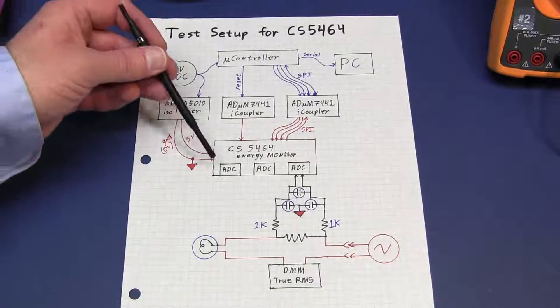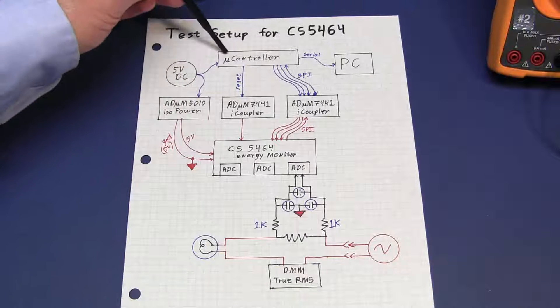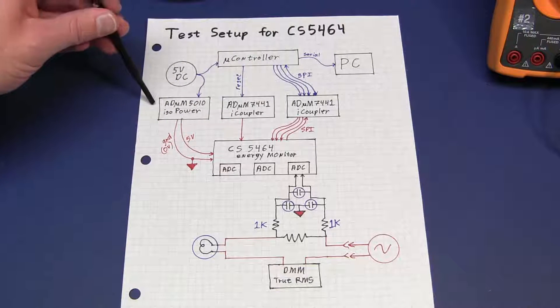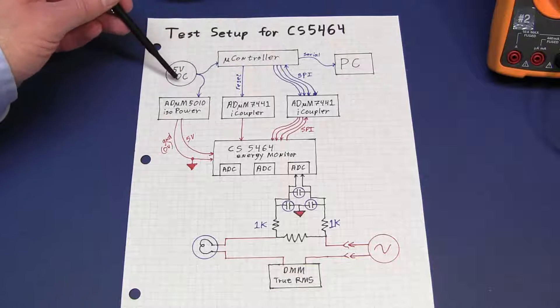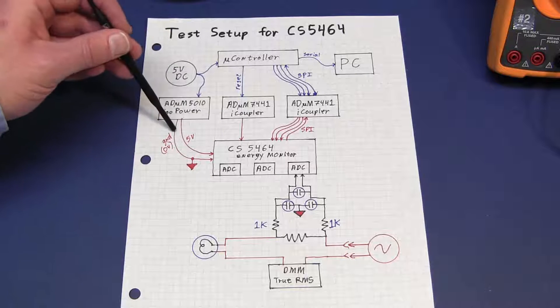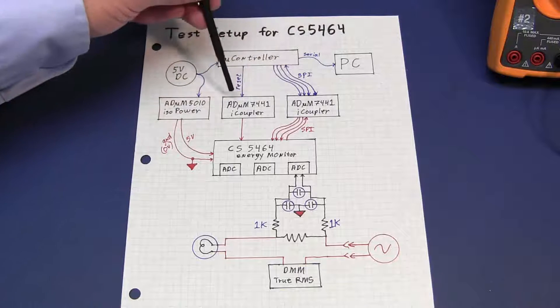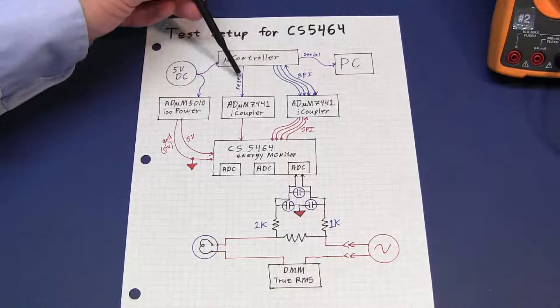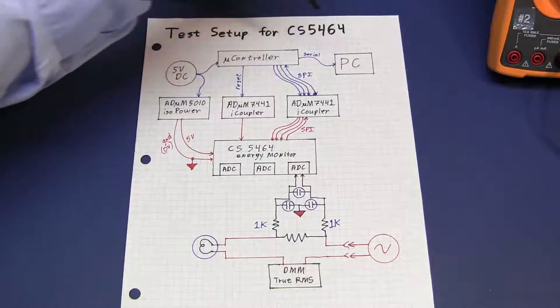Here's the test setup for today. We have the CS5464 in the center and it is connected to the microcontroller through a series of iCoupler devices from Analog Devices. We have 5-volt power coming off the microcontroller board into the 5010 and that provides isolated 5 volts out to the energy monitor. Same thing goes for the ADUM7441s. They provide the SPI and reset connection pins to the microcontroller and serial data then goes out to the PC.